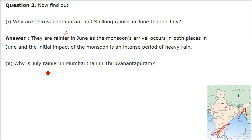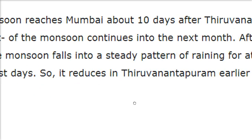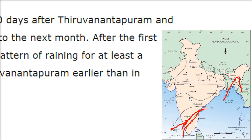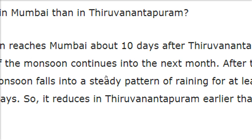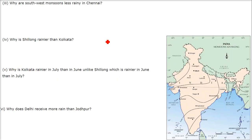This line is of 1st June. Why is July rainier in Mumbai than in Thiruvananthapuram? The monsoon reaches Mumbai about 10 days after — it's 1st June here and 10th June it reaches Mumbai. The monsoon reaches Mumbai after 10 days, so the initial impact of the monsoon continues into the next month. After the first initial downpour, the monsoon falls into a steady pattern of raining for a couple of hours most days, so it reduces in Thiruvananthapuram earlier than in Mumbai.